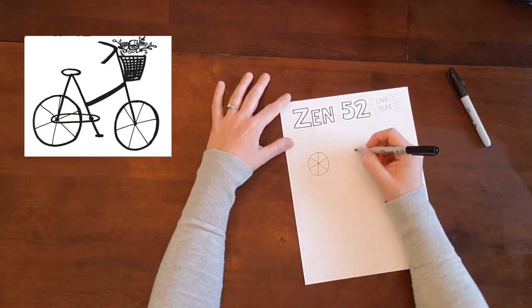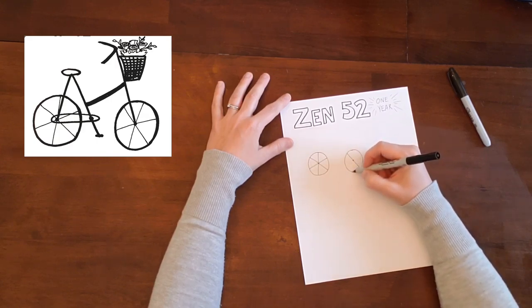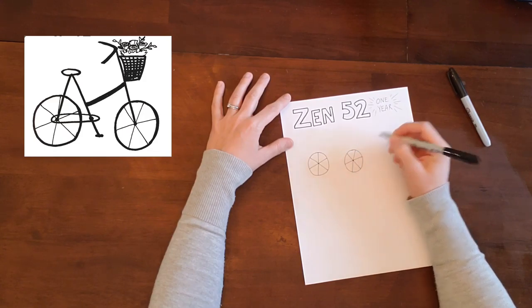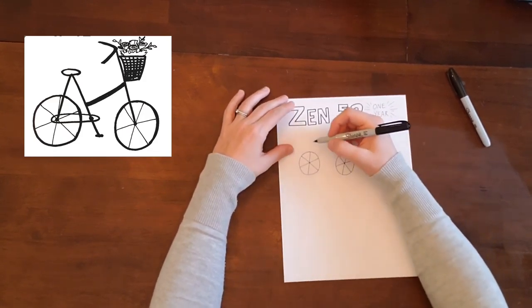You can do eight if that's easier, so just do an X and a plus. Then a little bit over, you're going to do the same thing. Draw another dot there and do the skinny X and the line through.